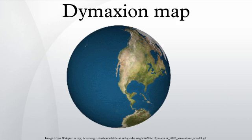The Dimitian map or Fuller map is a projection of a world map onto the surface of an icosahedron, which can be unfolded and flattened to two dimensions. The flat map is heavily interrupted in order to preserve shapes and sizes.